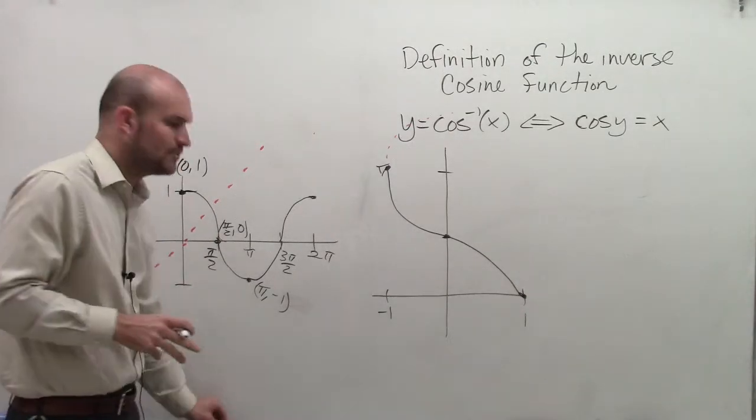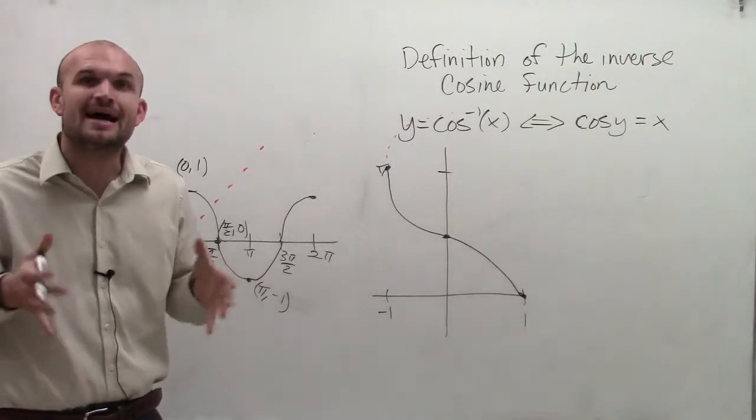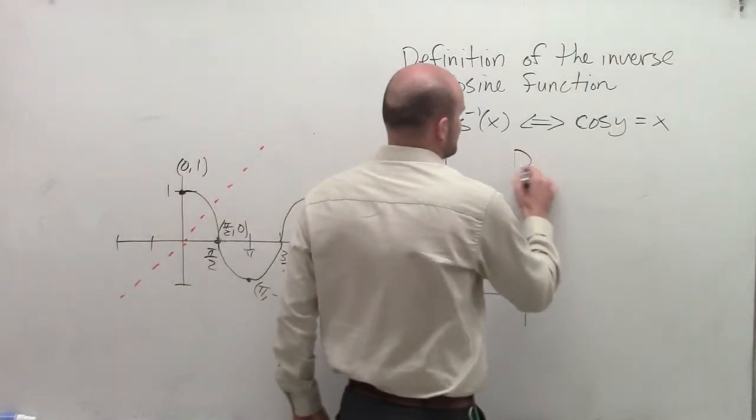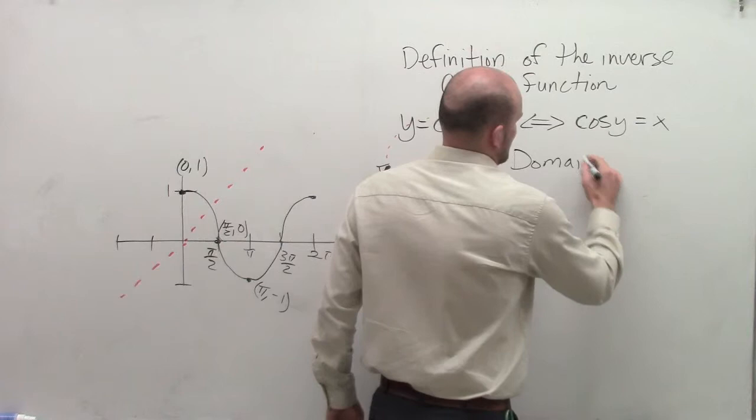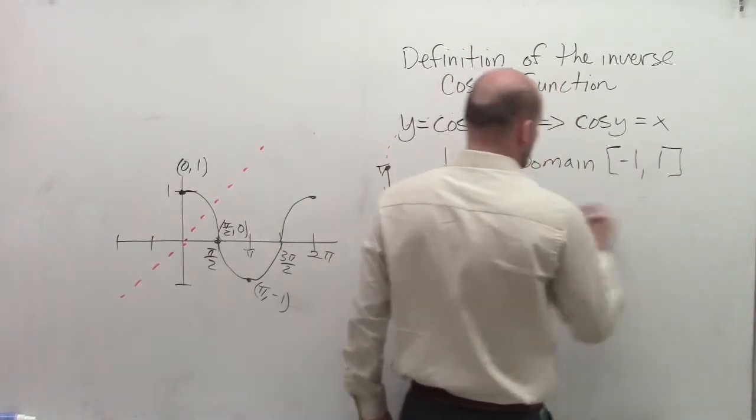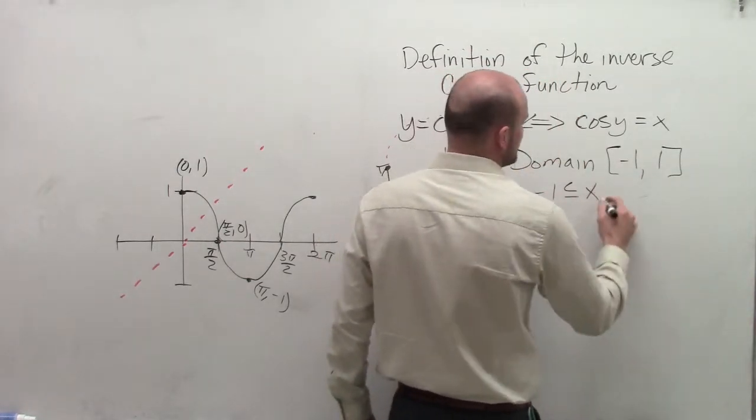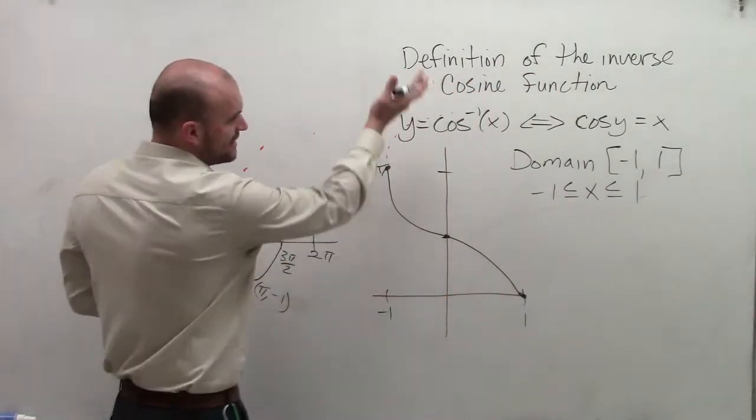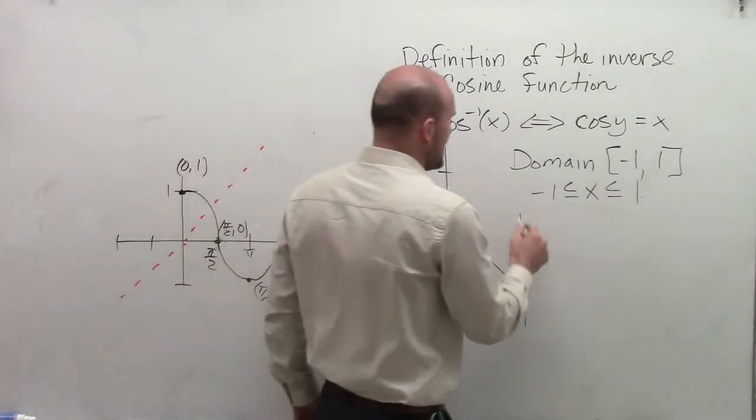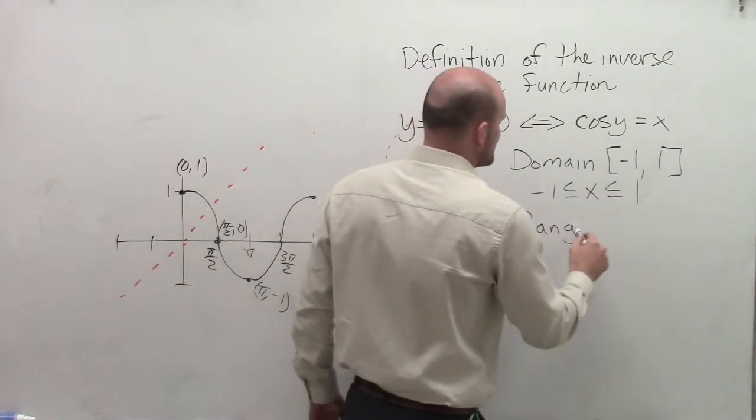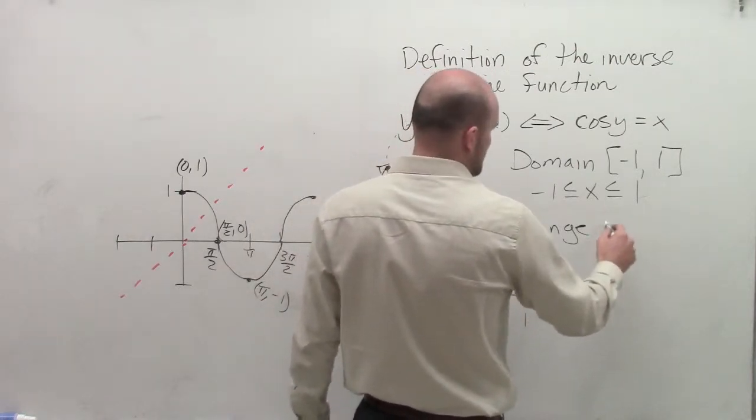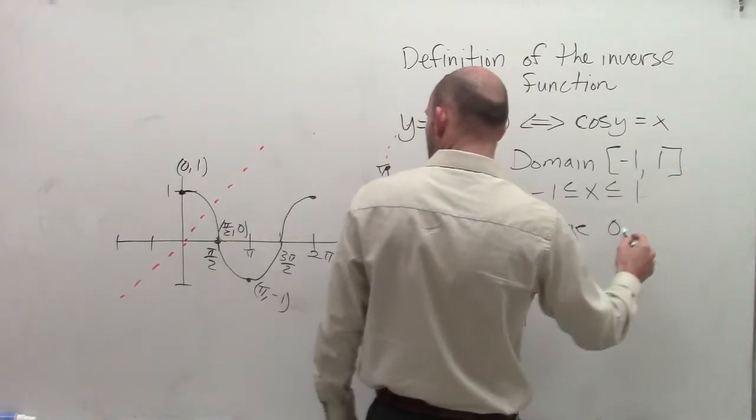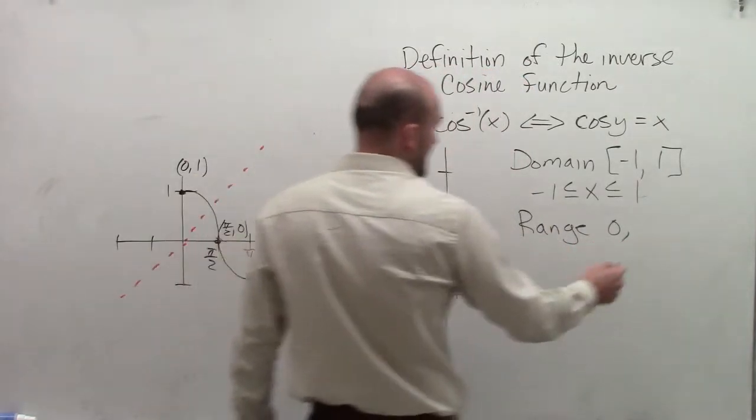In dealing with the inverse cosine, we have to have a restriction on its range. By looking at this graph, we know that the graph is now going to have a domain between -1 and 1, where we could say -1 is less than or equal to x, which is less than or equal to 1.